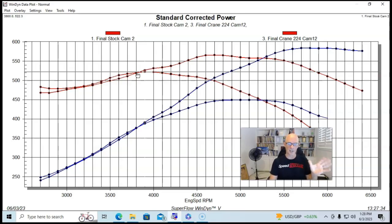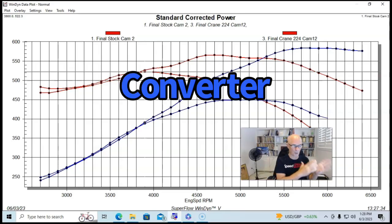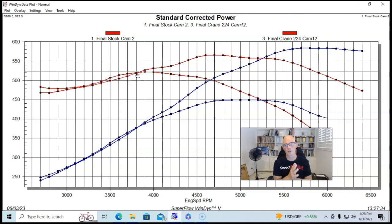Let's put a 2800 or a 3000 RPM stall converter in. And then the combination would work really, really good. This thing is making, at 4000 RPM, it's making as much or more power than the stock camshaft was. And then there on out, you're making a lot more.